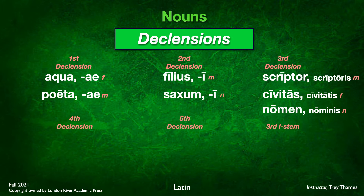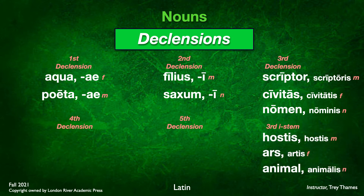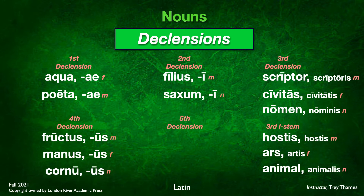We've also looked at a subcategory of third declension called the third declension I-stem — again masculine, feminine, and neuter forms: hostis, hostis; ars, artis; and animal, animalis. And then most recently we have looked at fourth declension: fructus, fructus; manus, manus; cornu, cornus — again masculine, feminine, and neuter forms.